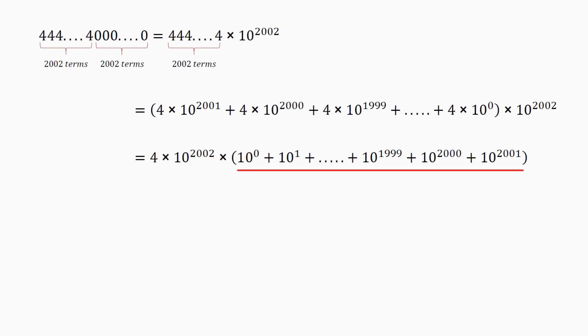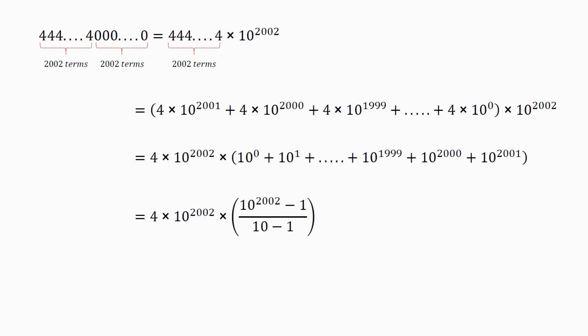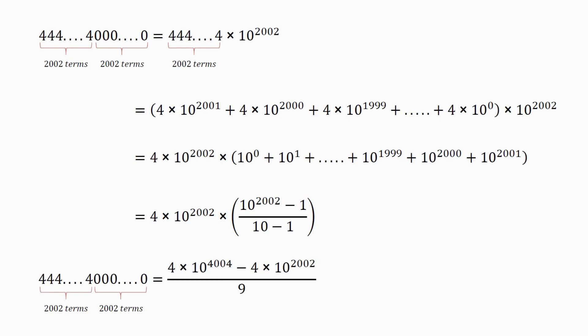This is a geometric series with first term 10 to the power of 0, which equals 1, and common ratio 10. So we get the left hand side equals 4 into 10 to the power of 2002 into the sum of the series, which is 10 to the power of 2002 minus 1, all divided by 10 minus 1. Simplifying, we get: 2002 4s followed by 2002 0s equals 4 into 10 to the power of 4004 minus 4 into 10 to the power of 2002, all divided by 9.